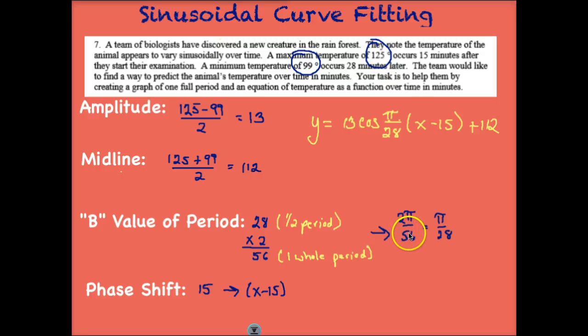To find the b value, remember, divide that into 2 pi, and we get pi over 28. Because our high occurs 15 minutes after they start the examination, we have a phase shift of 15. Putting that all together, we end up with an equation.